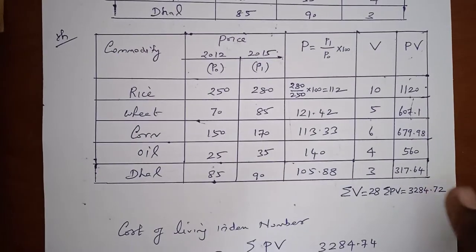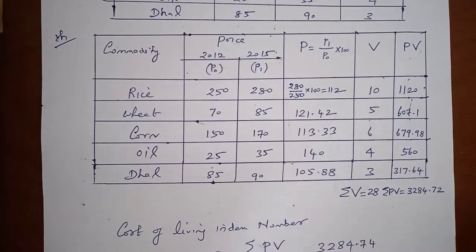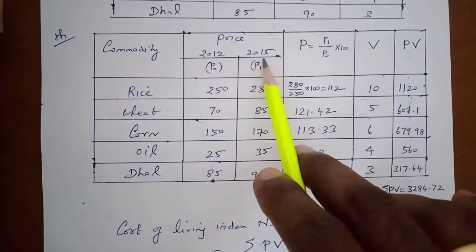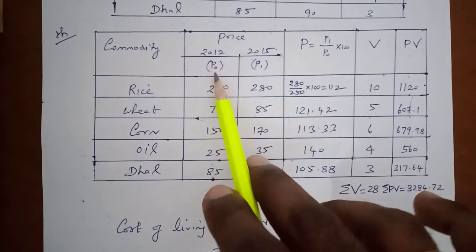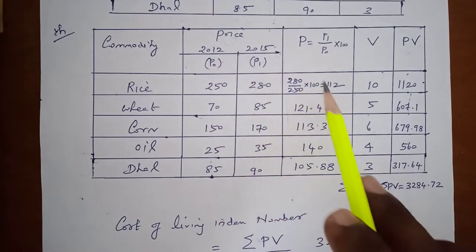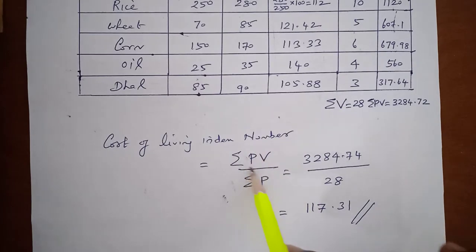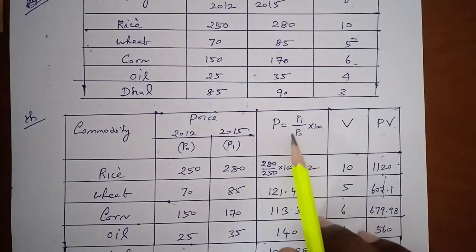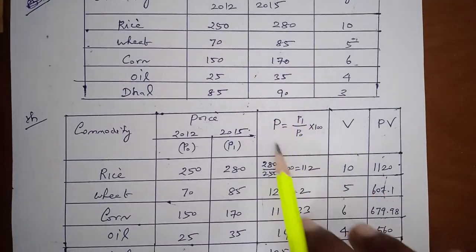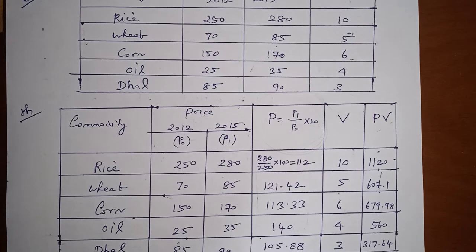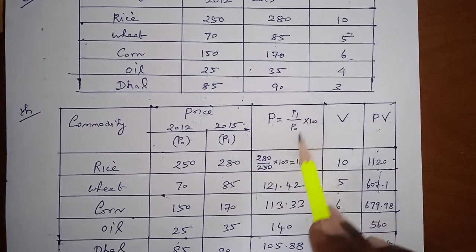Solution. The commodities are rice, wheat, corn, oil, and dal. The prices are taken for two years — the first year as the base year and the next as the current year. The base year price is denoted as P0 and the current year price is denoted as P1. We have to compute the capital P, where the formula is: capital P equals (P1 divided by P0) multiplied by 100.